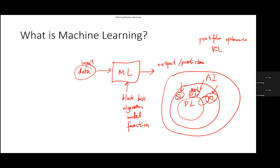There is also another term called data science, which spans across different domains with various overlaps. It is just how we characterize the class of algorithms we are dealing with. Some of these fields are evolving fast, so it may not be entirely accurate to say these are the only three types of learning paradigms.